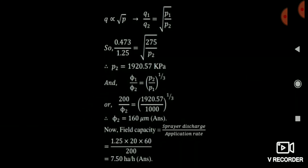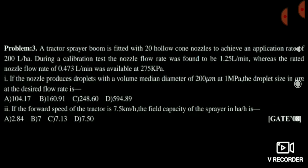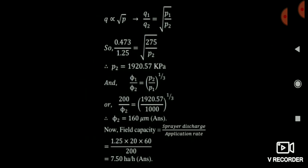Once the pressure P2 at the desired flow rate is calculated, apply the diameter–pressure relationship: diameter ∝ 1/P^(1/3), so φ1/φ2 = (P2/P1)^(1/3). Given φ1 = 200 microns at P1 = 1 MPa = 1000 kPa, convert and solve for φ2. The calculated droplet diameter φ2 at the desired flow rate is 160 microns.